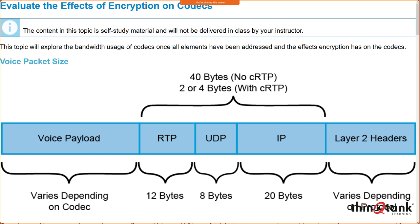We're talking about 40 bytes of layer 3 and above overhead per packet. Compression is typically applied on slower speed links — links slower than 768K — because one of the big issues with packet delivery over a serial link is serialization delay: how long it takes to process that packet onto the wire, which can introduce jitter.